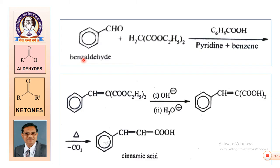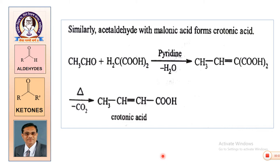So the aldehyde reacts with the reactive methylene compound to give a condensation product; the condensation product is hydrolyzed and neutralized to get a dicarboxylic acid; the dicarboxylic acid is decarboxylated to get the unsaturated acid — cinnamic acid. Similarly, with acetaldehyde and malonic acid, you get a similar type of product, that is crotonic acid, following the same reaction protocol.